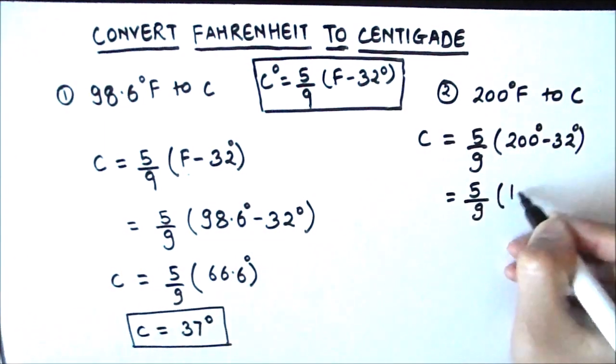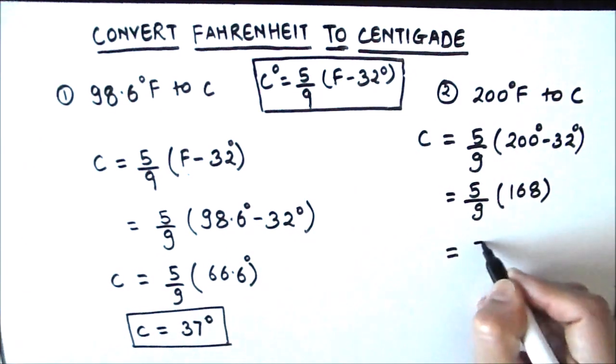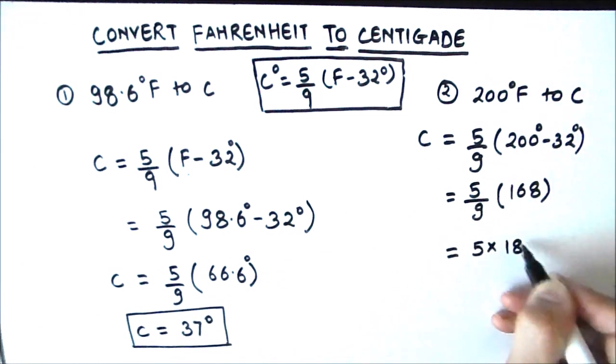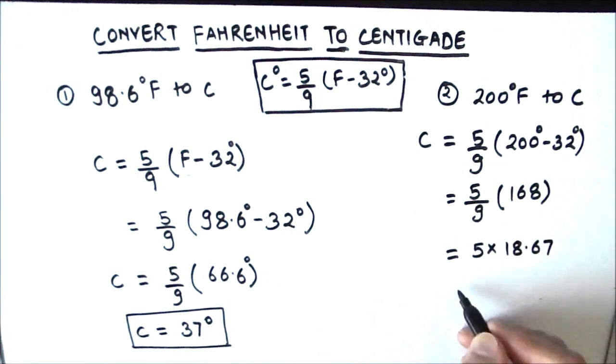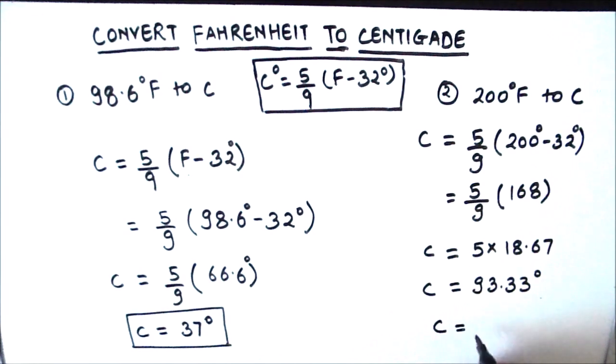That's going to be 5 times 18.67 which is equal to 93.33 degrees. So 200 degrees Fahrenheit is equal to 93.3 degrees centigrade.